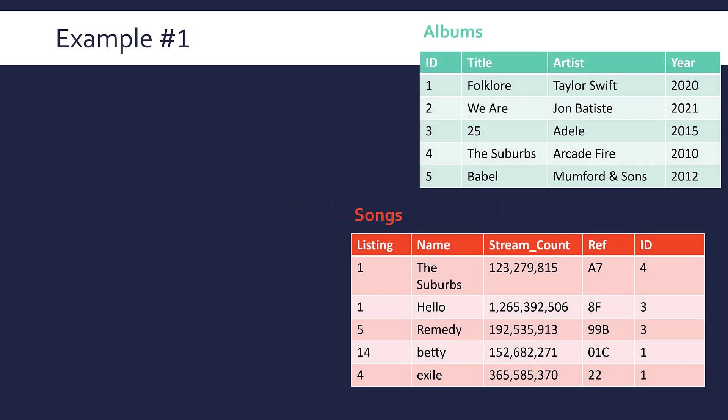Let's look at an example. I've got two tables here. One you might have seen before, which is albums, and I've also got a table called songs. They're connected via a foreign key. Looking at it, can you decide what is the primary key and what is the foreign key? There should be two primary keys and one foreign key. In albums, our primary key is ID. All of the fields here are unique, but if this was a proper database for Spotify or Apple Music, you would not have no repeats. So ID is most sensible.